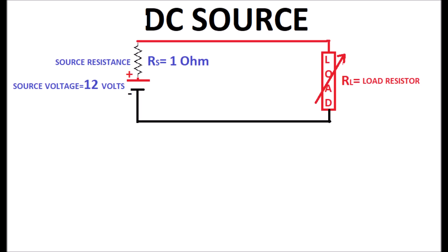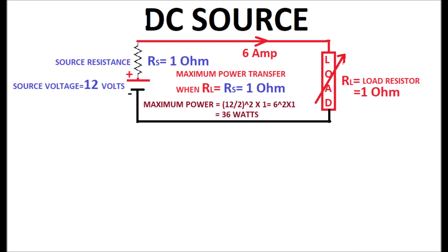A DC source of 12 volts with internal resistance Rs equal to 1 ohm is connected to a variable load resistor. Maximum power transfer occurs when the load resistor is equal to the source resistance of 1 ohm and the maximum power is 36 watts as shown in the display.